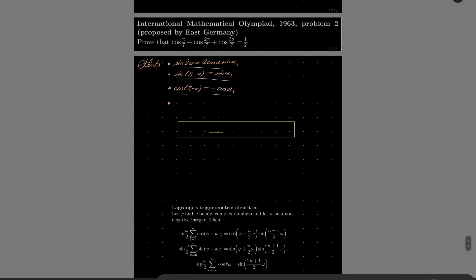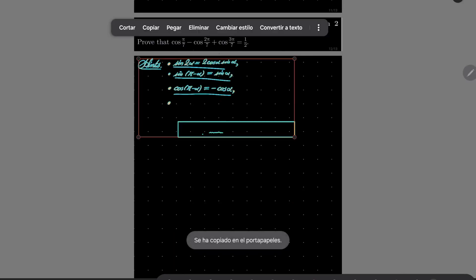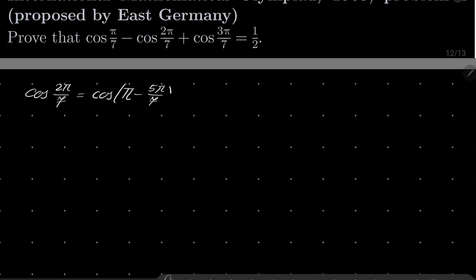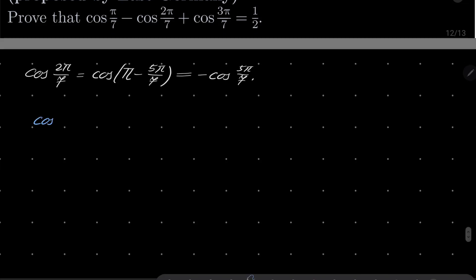Maybe I will use it later, so let's copy it. All right, so let's start with taking cosine 2 pi over 7. Notice that cosine of 2 pi over 7 is the same as cosine of pi minus 5 pi over 7, which is minus cosine of 5 pi over 7, which means that our sum can be written in the following way.